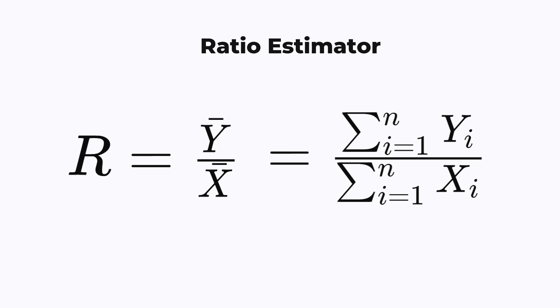Let's take a look at the ratio estimator. Ratios often come up in statistics, because a lot of things we care about are ratios between things. For example, the GDP per capita is the GDP of a country divided by the number of people in the country.